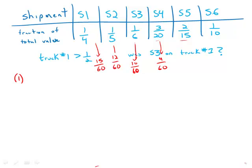Multiply top and bottom by 4, we get 8 over 60. And finally, one tenth is 6 over 60. So now they're very easy to compare.